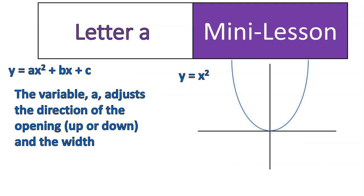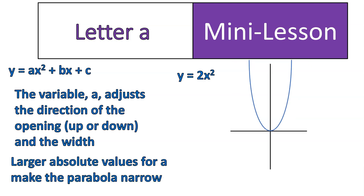Let's move along and talk about the other thing that the a value will adjust. And that's the width. So if I change this from y equals x squared to y equals 2x squared, what happens is that the graph does this. Notice it went from that to that.